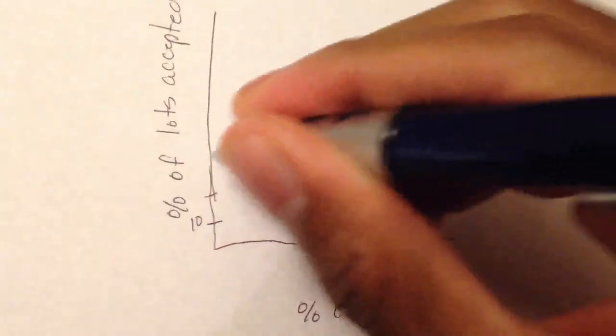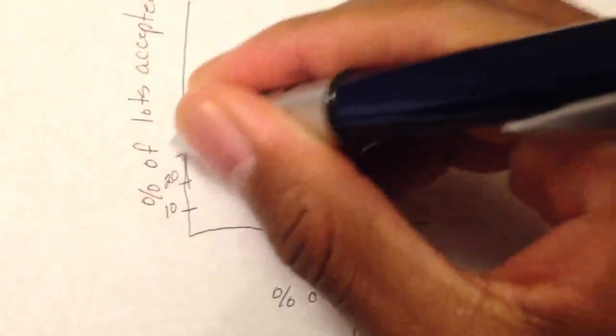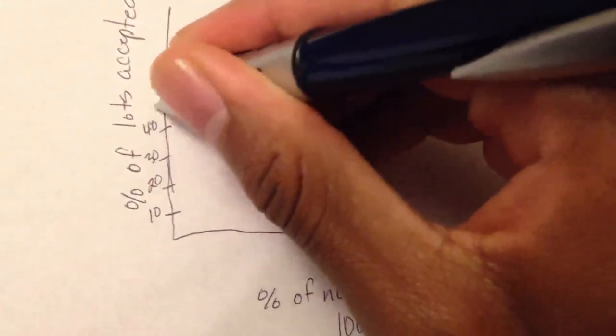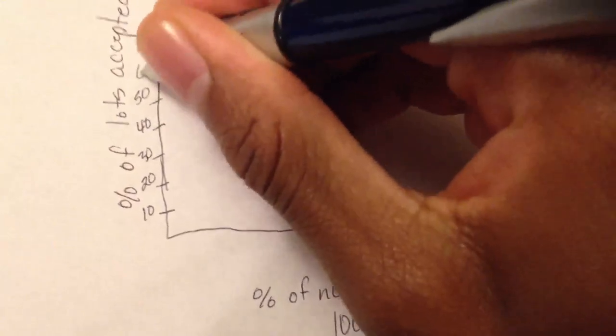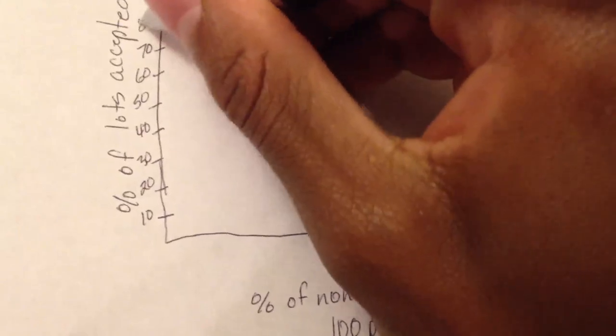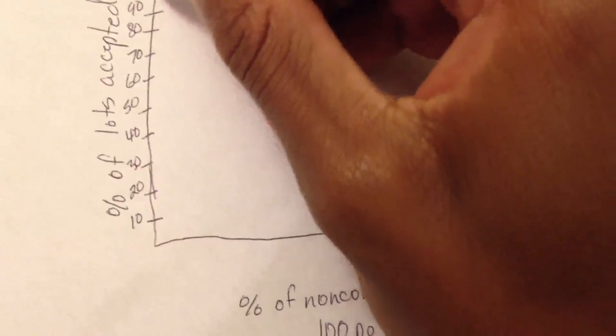100. Then you just want to put some numbers on here: 10. Since it's a percentage you go up to 100. 100, ran out of space.